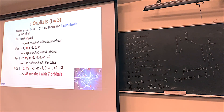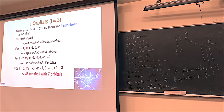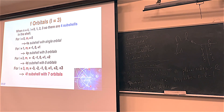The 4F subshell is the fanciest one — it has 7 orbitals, like a mansion. It's the most rooms we've seen in any subshell. We'll see why that affects the periodic table.